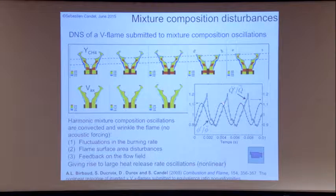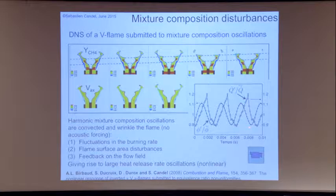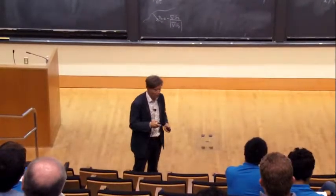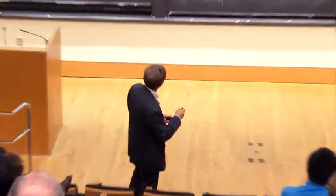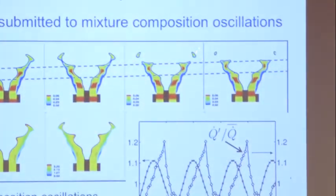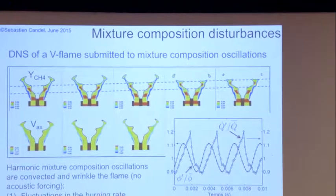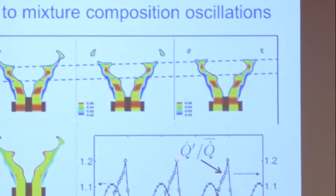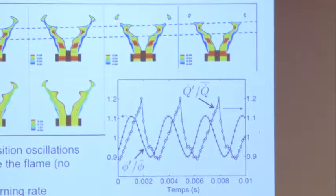You have this equivalence ratio which is sinusoidal, but the heat release is periodic, not sinusoidal. You create harmonics because the flame is not quite a linear system. You have this very strong nonlinearity taking place because pockets are produced which then send the pressure field, and there is a very large peak in heat release fluctuation.